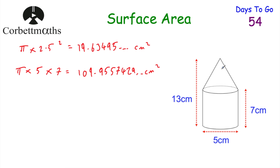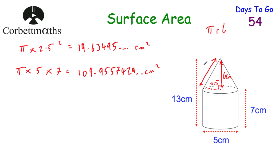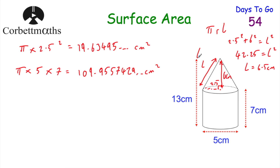Finally, we need the curved surface area of the cone, which is pi R L. The radius of the base is 2.5, but we need to find L, the slant height. Since the total height is 13 cm and the cylinder height is 7 cm, the cone's height is 6 cm. Using Pythagoras' theorem: 2.5 squared plus 6 squared equals L squared — that's 42.25 — and square-rooting gives L equals 6.5 centimetres. Remember: for the cone's curved surface area, use the slant height, not the perpendicular height.